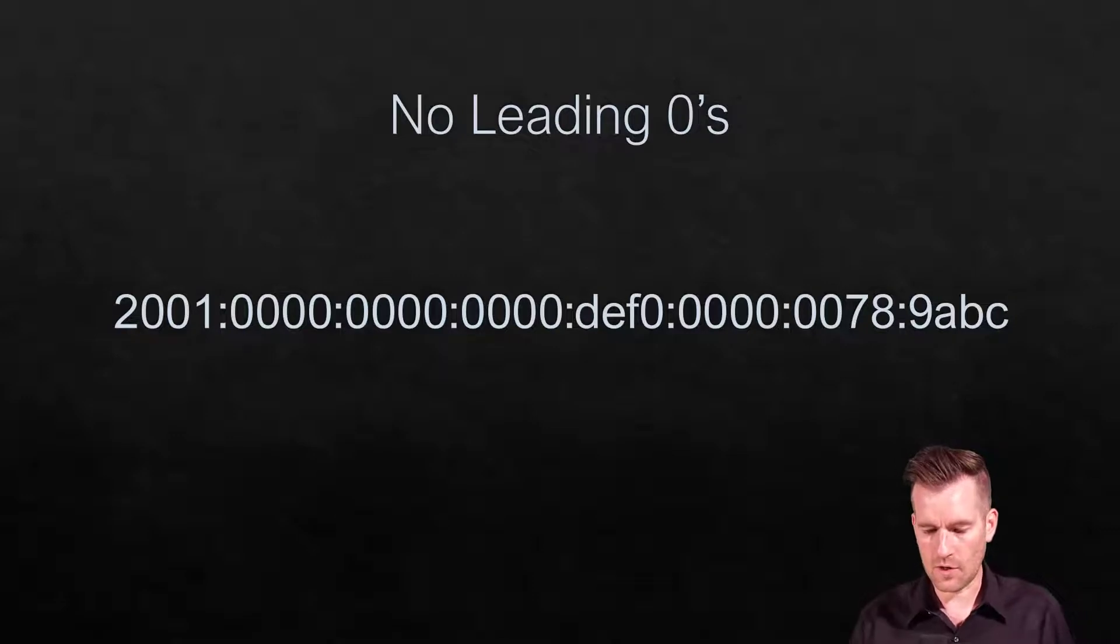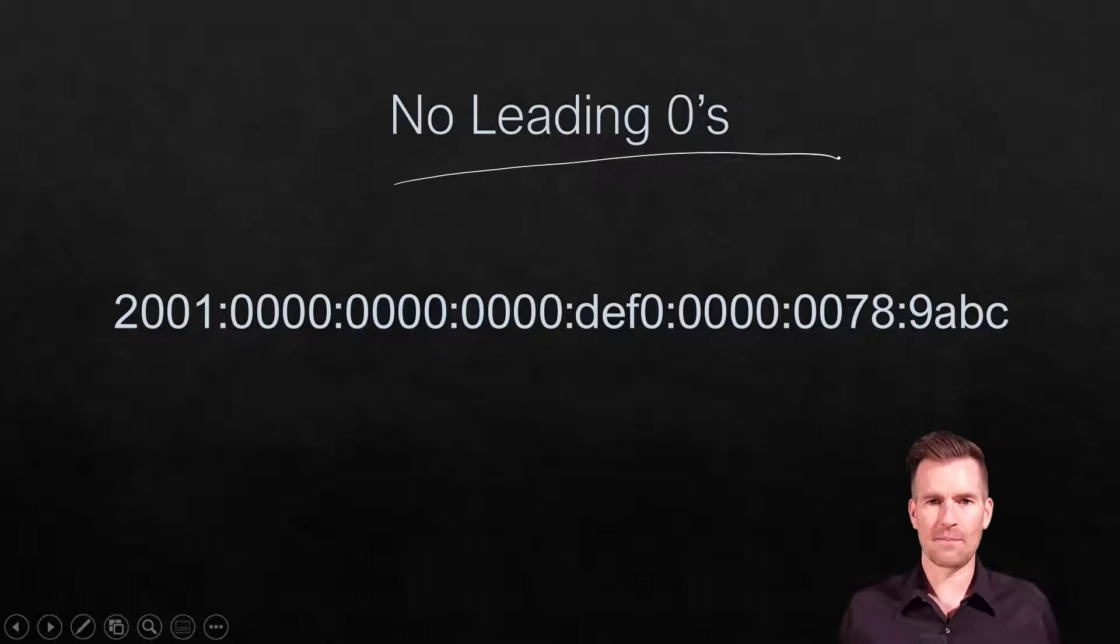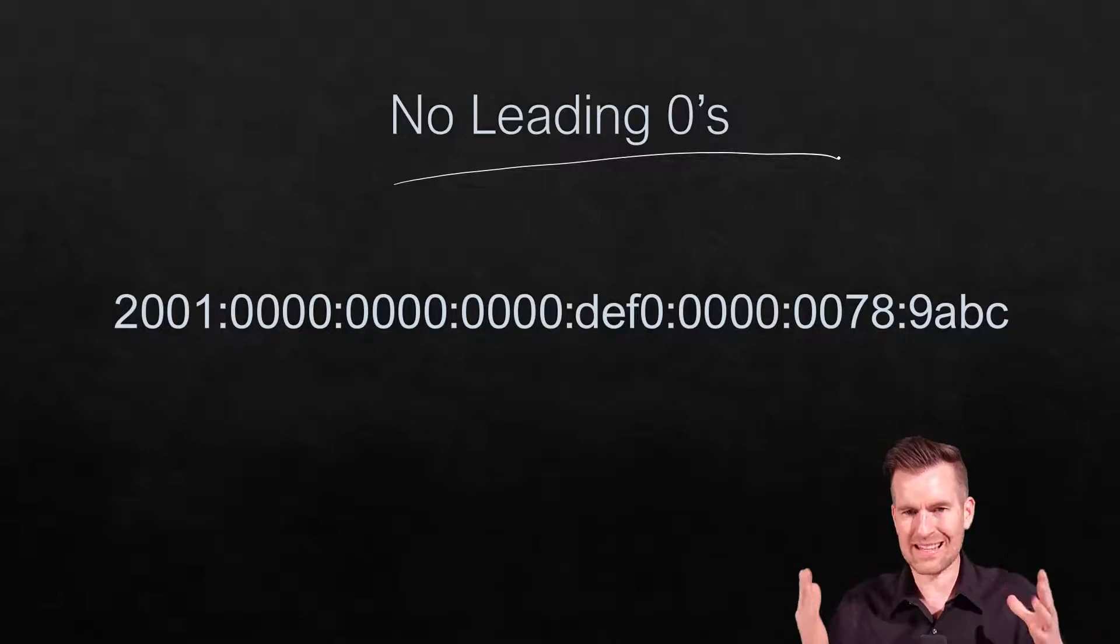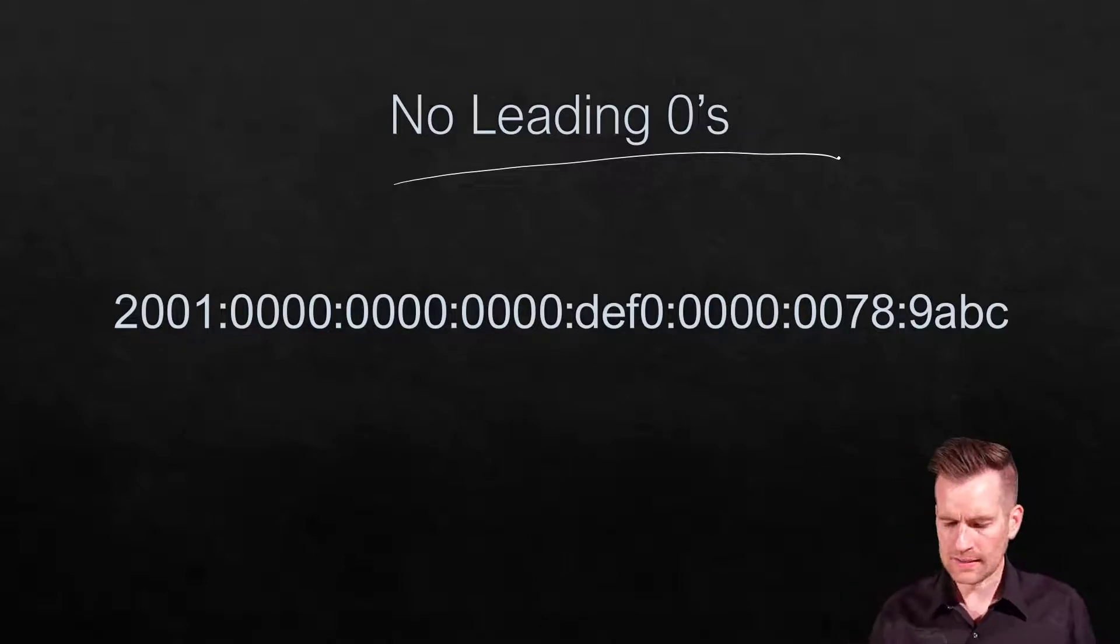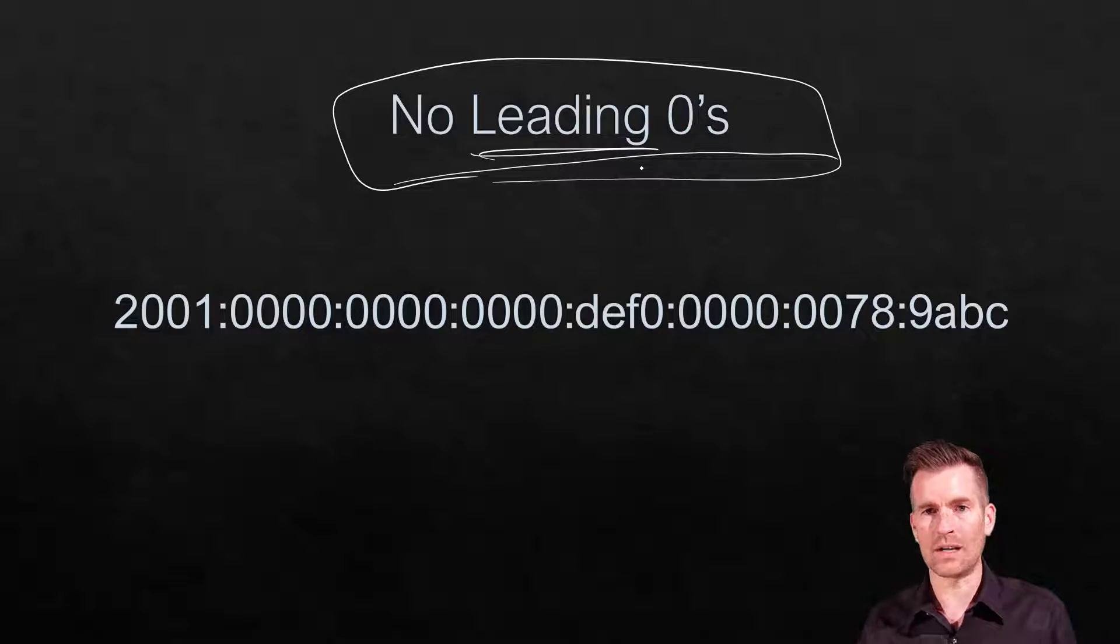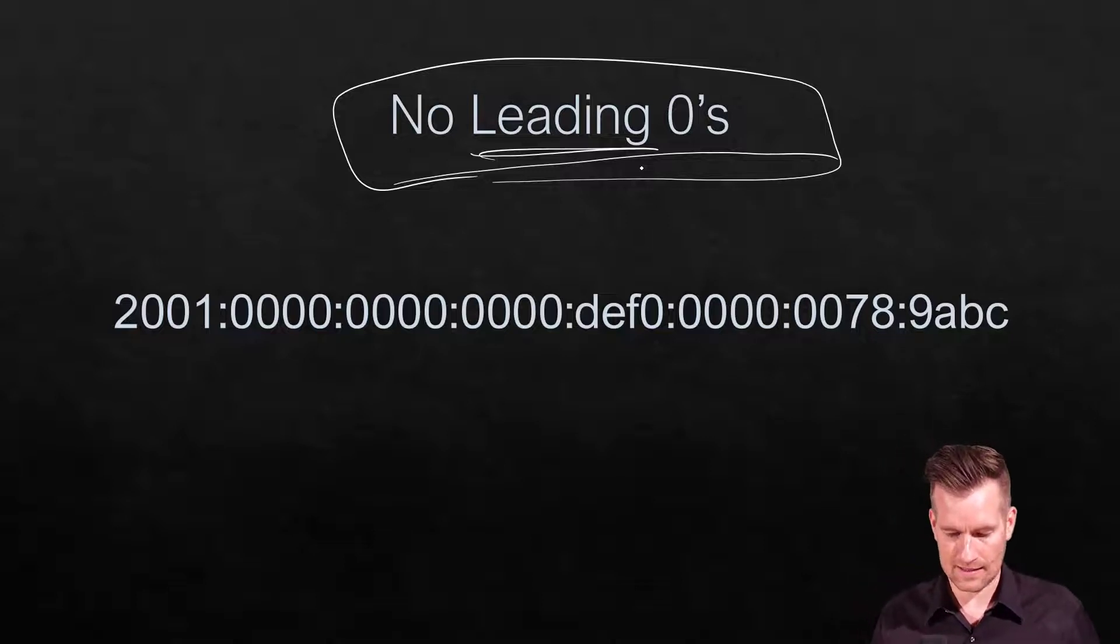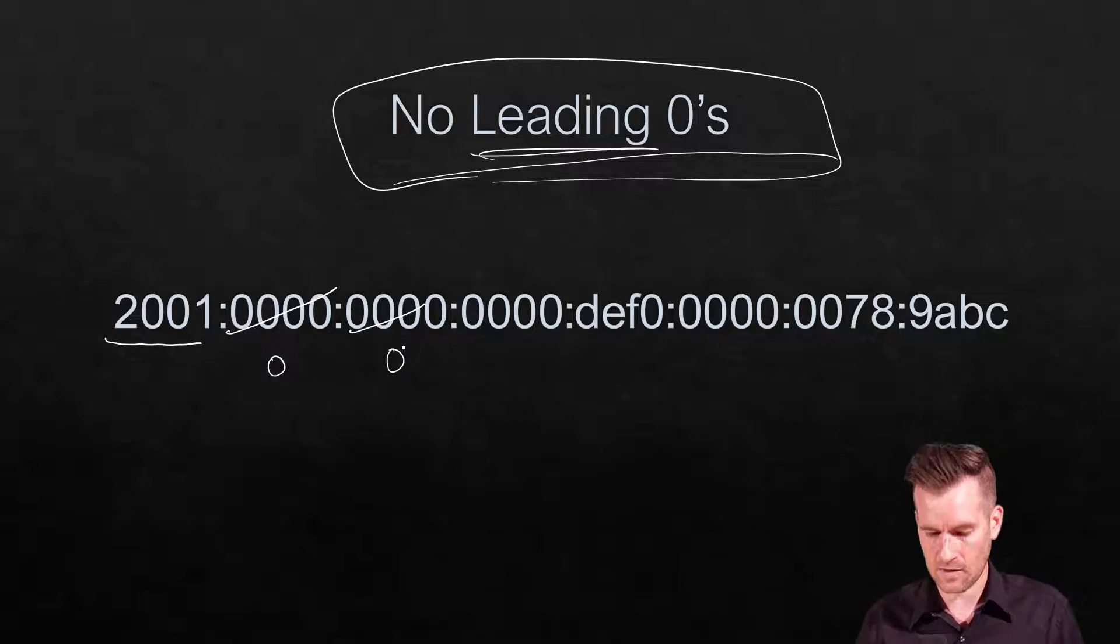Here's the rule of no leading zeros. The address space is so huge that we use a lot of zeros, but we can cut down on leading zeros - those at the front of each hextet. We look at each hextet individually. If there are leading zeros, we can remove them. For example, three leading zeros can be cut down to just zero.